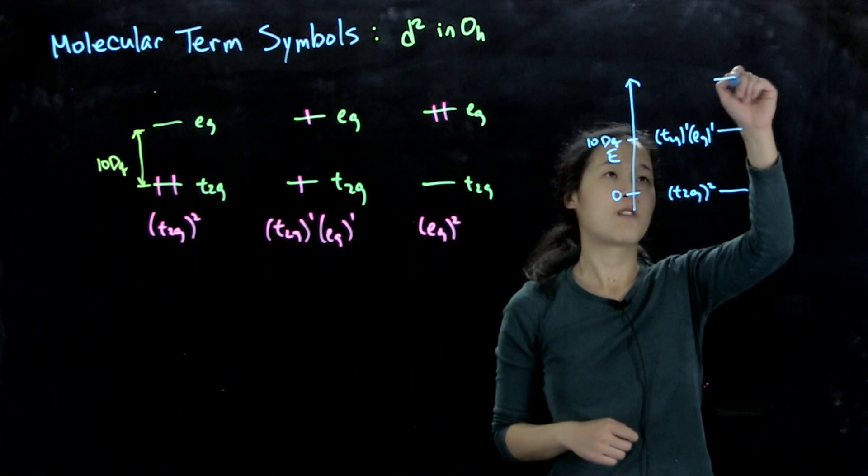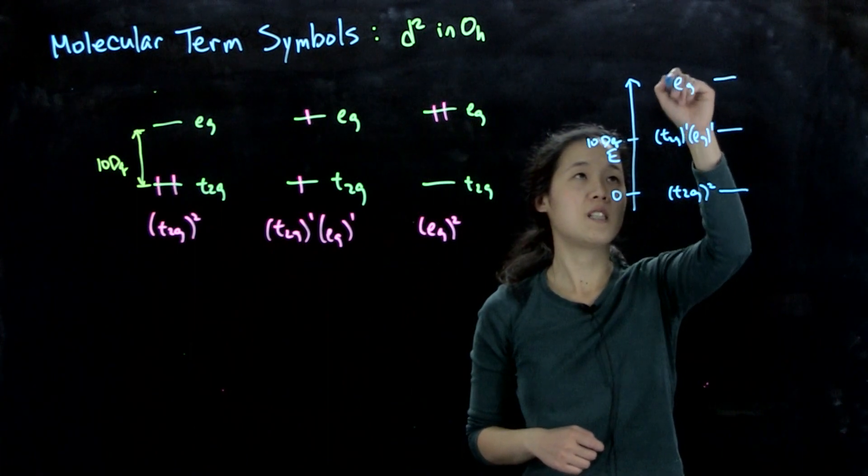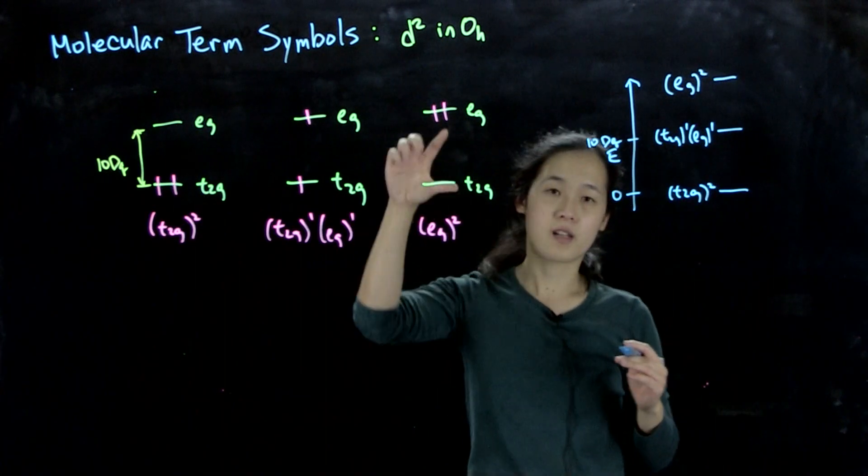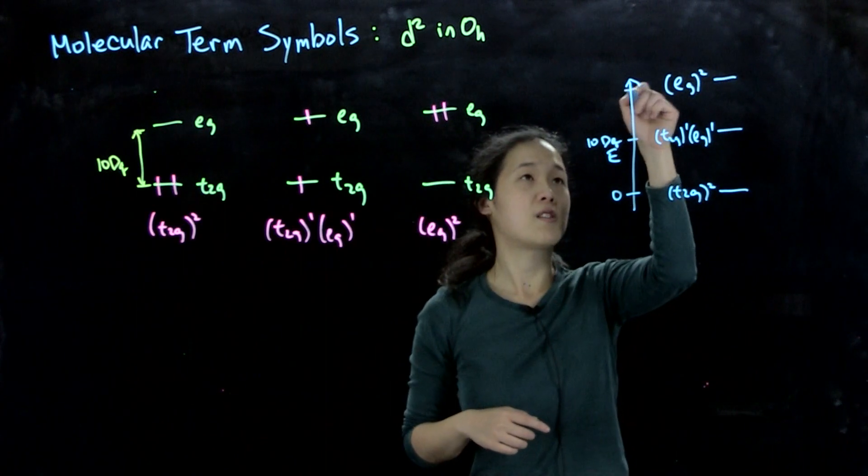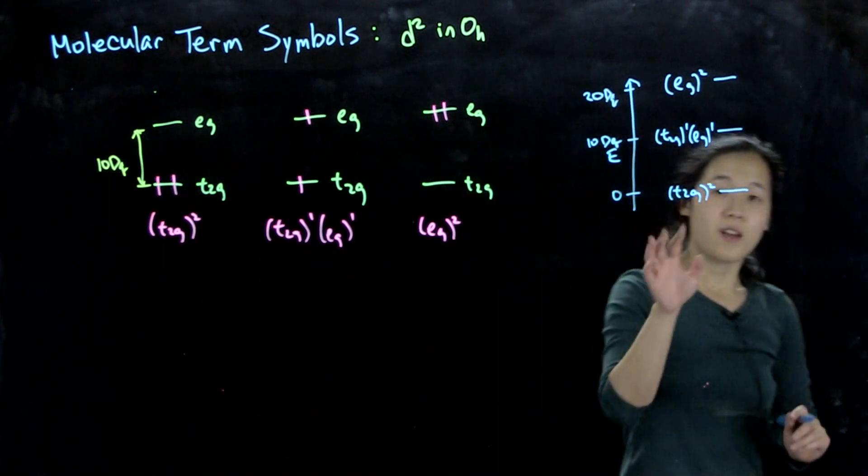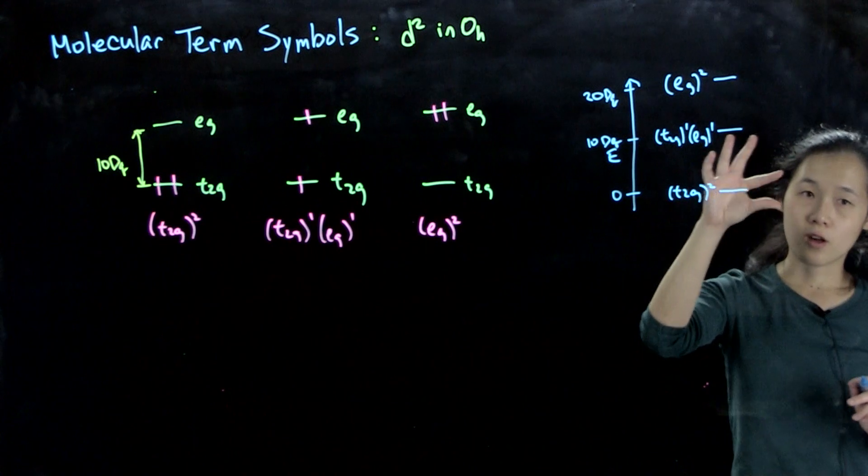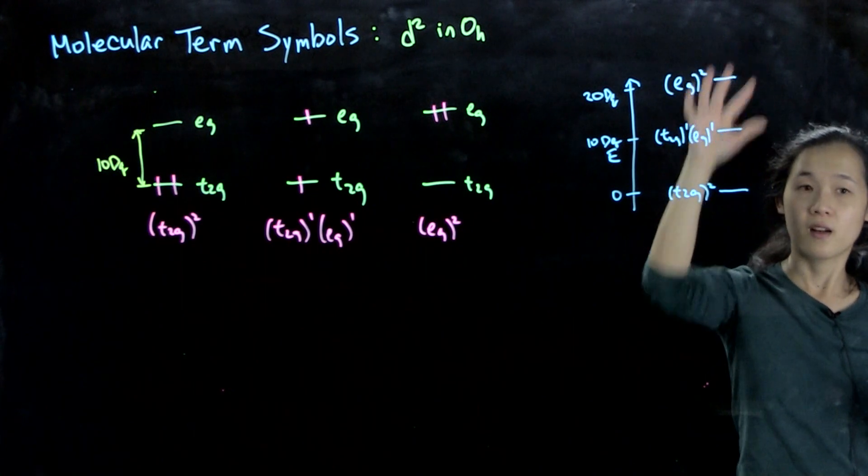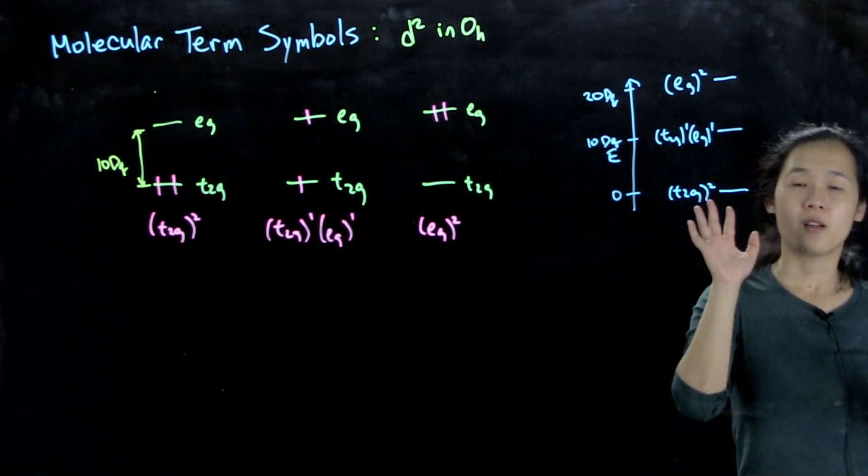And then any term that arise from this configuration, eG², must be even higher in energy because we have to put two electrons across this gap. So this will be around 20dq. And again, each of these configurations will have terms that split off due to electron-electron repulsion. So we might have things that kind of split off here. So we don't know what those are yet, but let's talk about how we get them.